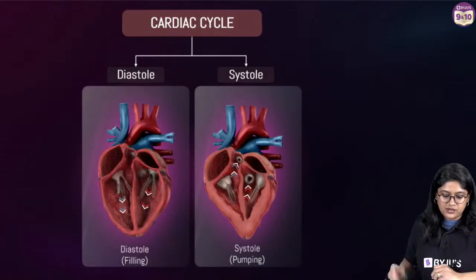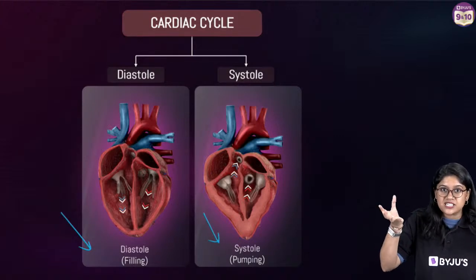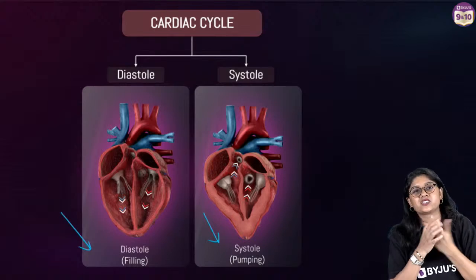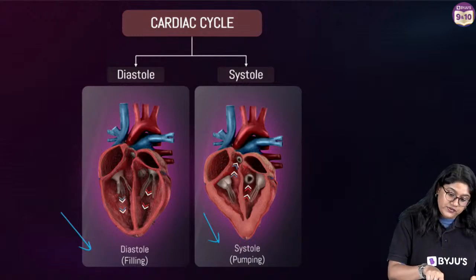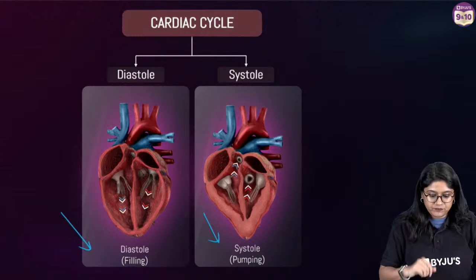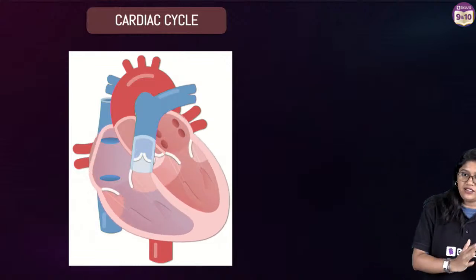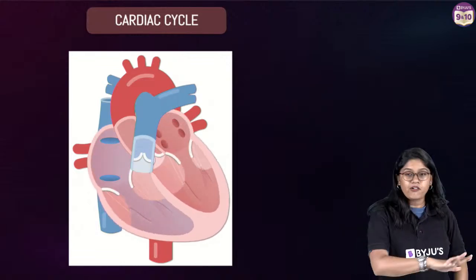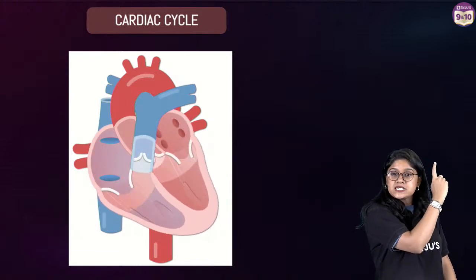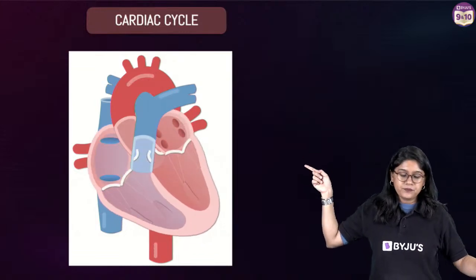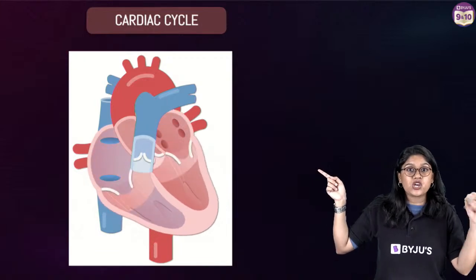In diastole we have filling, and in systole we have pumping. In diastole we see relaxation and when it's relaxed it fills the blood. When the ventricles are contracting, in systole we have the pumping. We can see the continuous contraction and relaxation of the chambers of the heart, and we can clearly see how contraction happens and ventricles are moving.